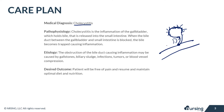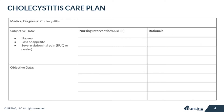The desired outcome of our patient is that they'll be free from pain and resume and maintain optimal diet and nutrition. Now let's look at our care plan. The patient may be experiencing nausea and loss of appetite because of the blockage that isn't allowing the bile to flow into the intestines. They may also be experiencing severe abdominal pain in the right upper quadrant or in the center because of the blockage and inflammation.